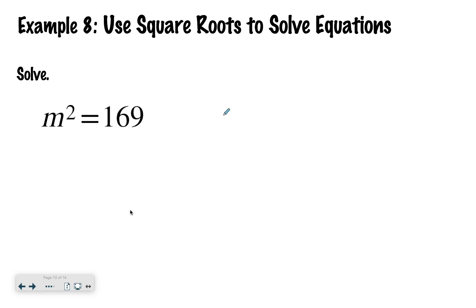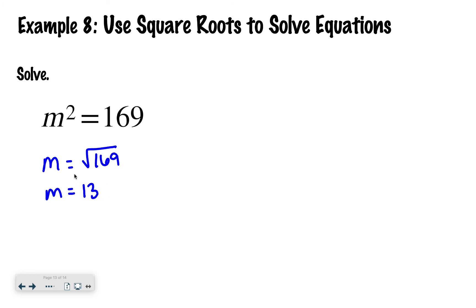Now let's practice solving this problem. I have m squared equals 169. So I'm going to take the square root to undo the square: m equals the square root of 169, which is 13. When you're solving an equation like this, you include the plus or minus. So m equals plus or minus 13, meaning positive or negative 13.